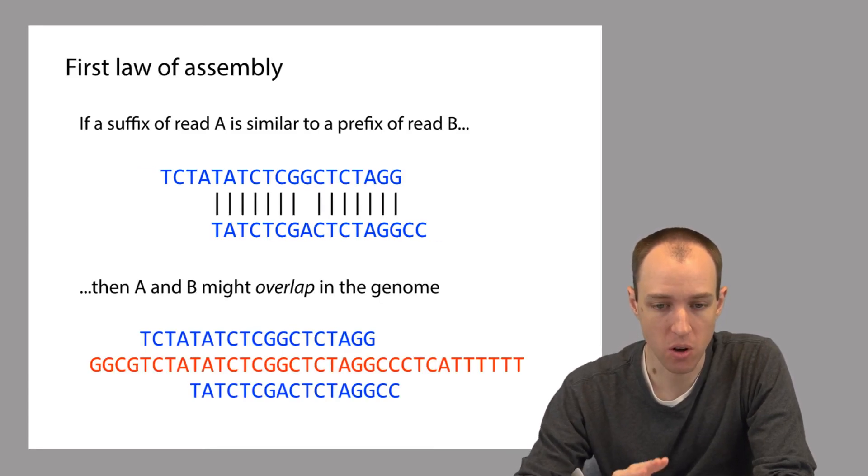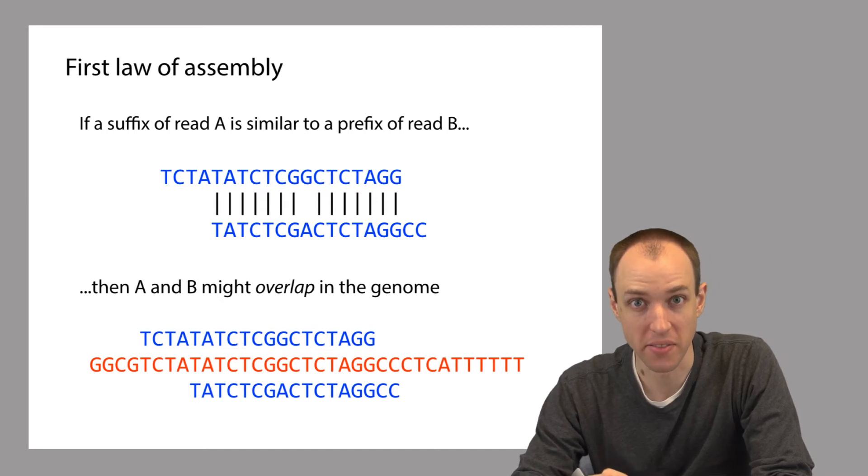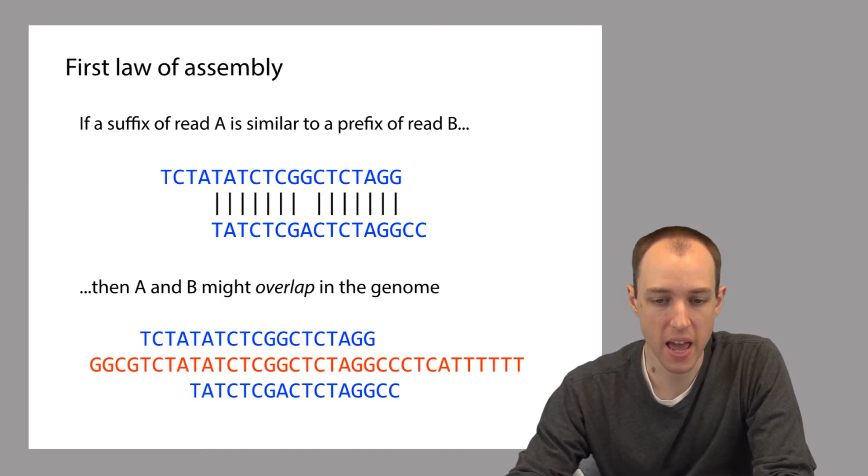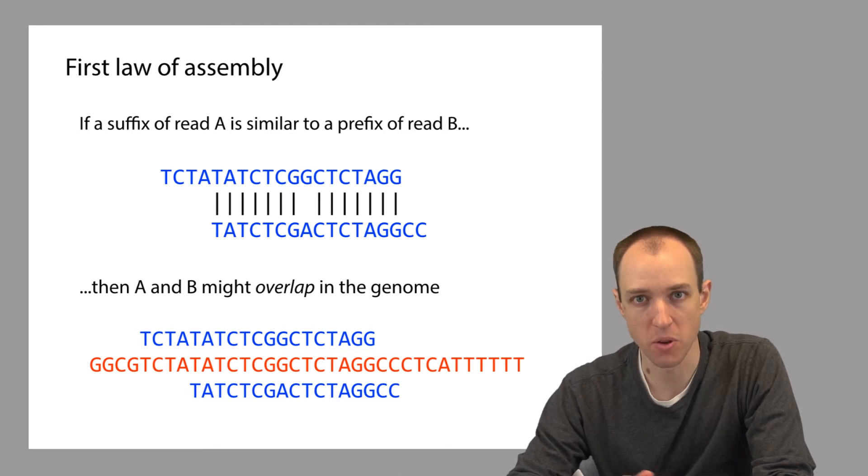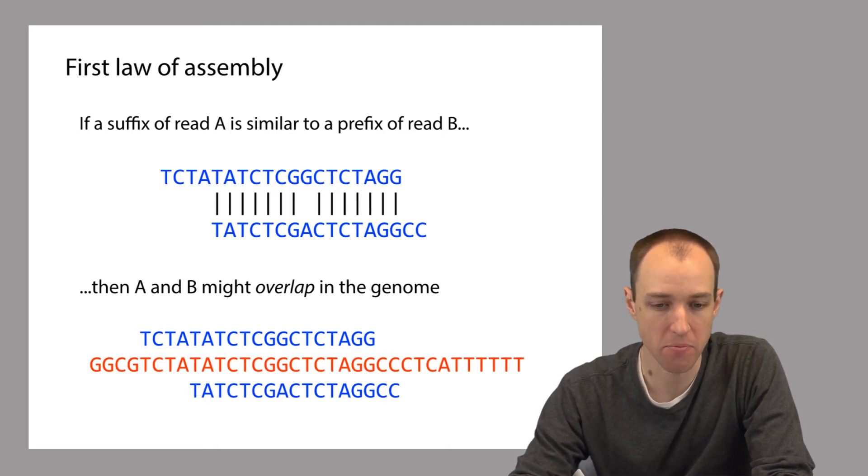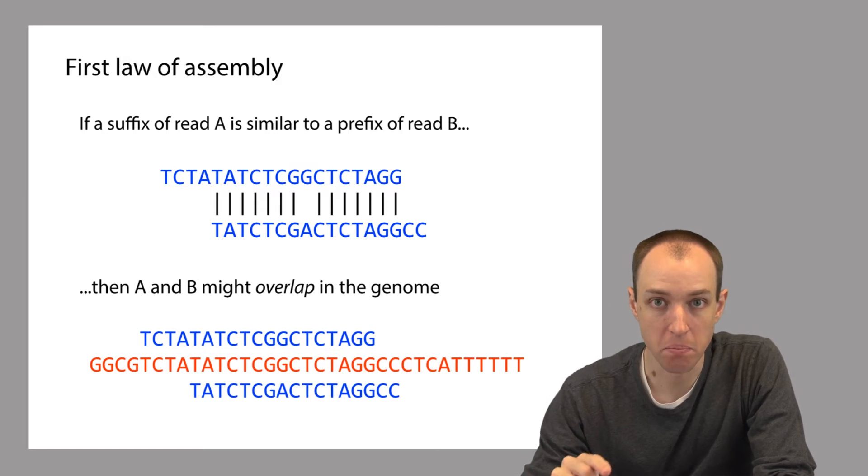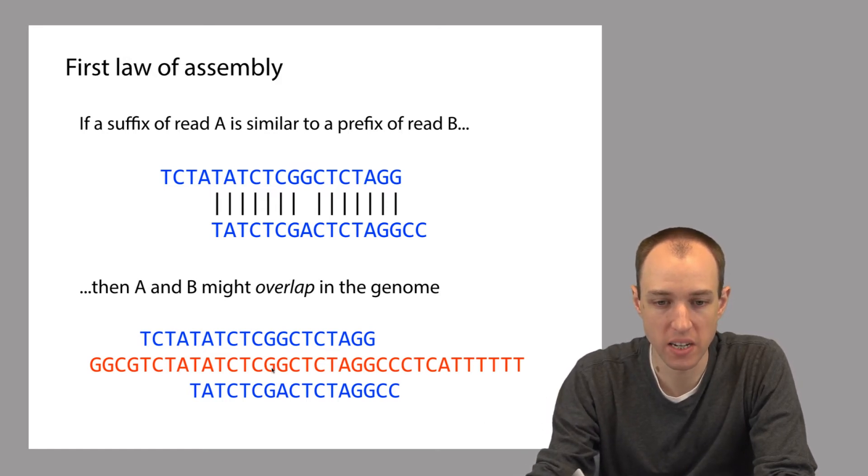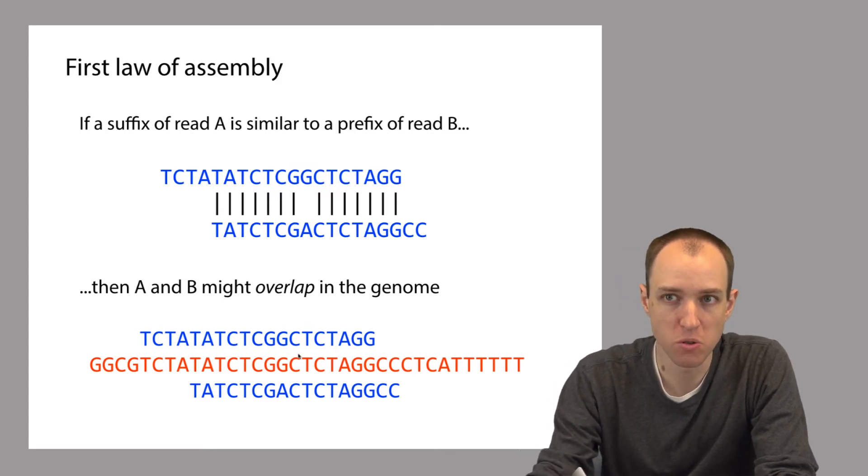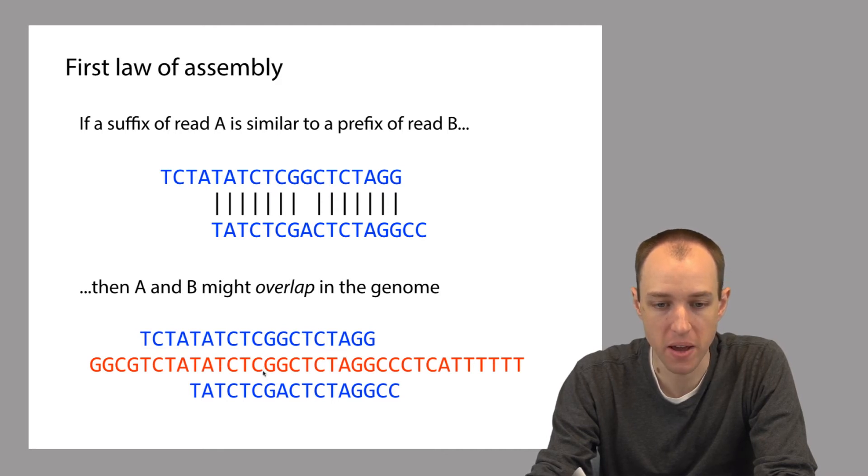Here's a principle that we'll call the first law of assembly, because so much of what we discuss later on is going to depend on this principle. If a suffix of some read A is similar to a prefix of some other read B, then A and B are likely to overlap with respect to the genome that they came from. Looking at this picture down at the bottom of the slide, this red string here is the genome, and the two blue strings represent two different reads, and both of them overlap the same region. So because of that, the suffix of one of these reads, the one on the top, is going to match a prefix of the other, the one on the bottom.